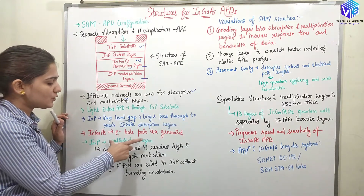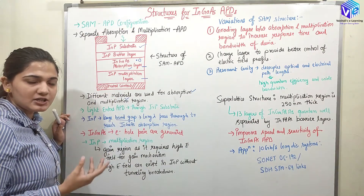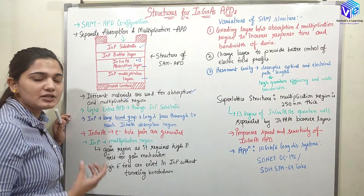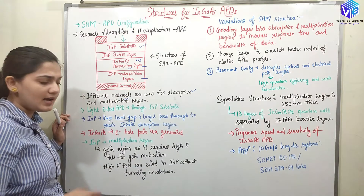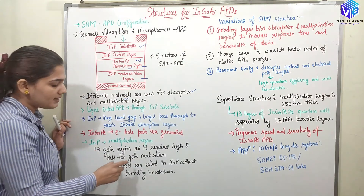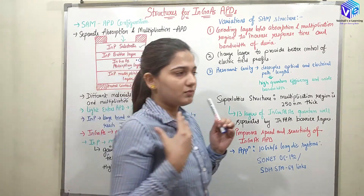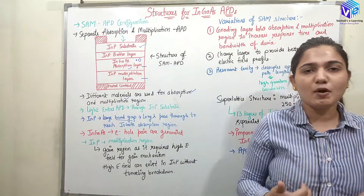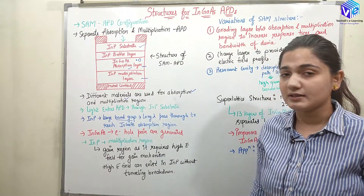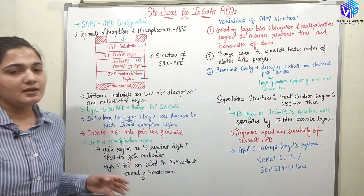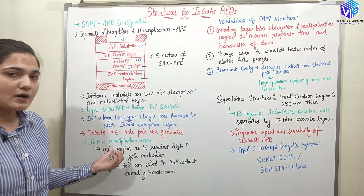The indium phosphide is used as a multiplication region and it is also the gain region. We can call the multiplication region the gain region, and in the gain region we require a higher electric field. The electric field here should be very high, and indium phosphide has the property that a high electric field can exist in it without having tunneling breakdown. Many materials have the problem of tunneling breakdown due to which we cannot generate a very high electric field in them, but in indium phosphide we can generate a very high electric field, which is why it is called the gain region.